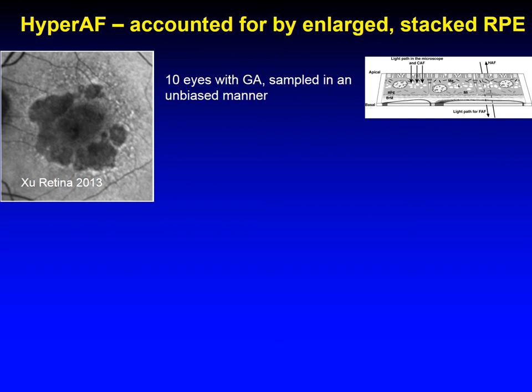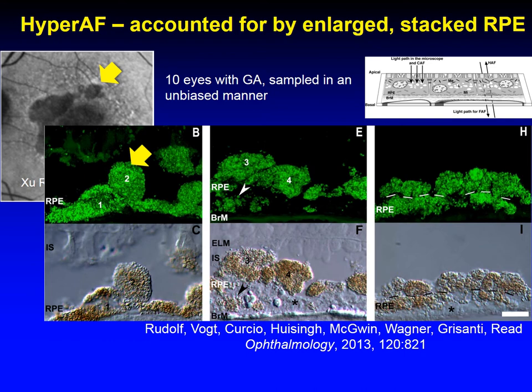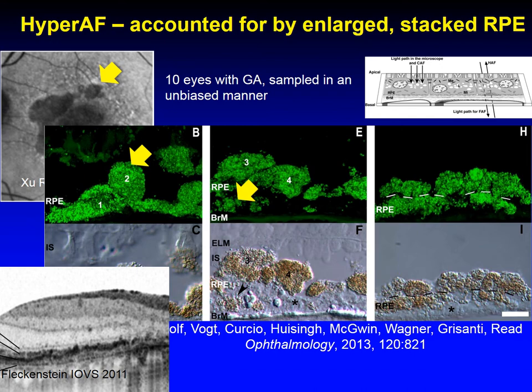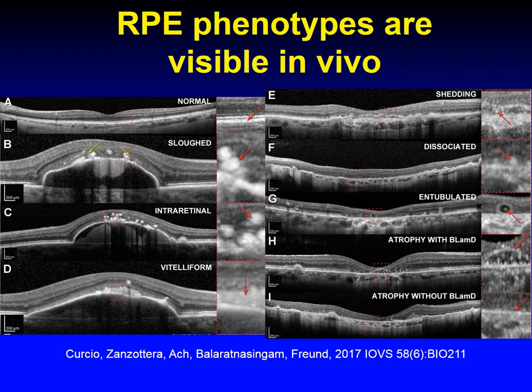In geographic atrophy of AMD, the RPE dies and autofluorescence disappears. The border is often hyper-autofluorescent. Our histology of 10 GAs, whose edges were sampled in an unbiased manner, shows enlarged, stacked, layered cells and autofluorescent material in the underlying deposits and overlying retina. This dysmorphia explained the higher autofluorescence signal. We can see the RPE dysmorphia by SD-OCT. Importantly, we learned from studies of histology and clinical imaging how RPE dies off the top of drusen. We saw many of the same 15 histologic phenotypes in excellent structural OCT images.